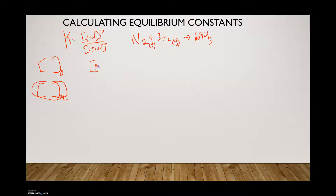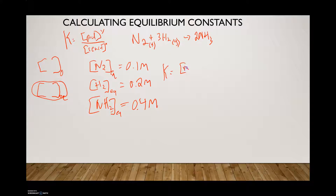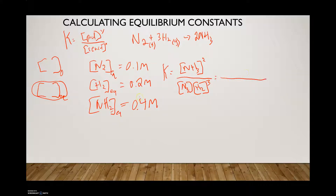In this example, let's say we have the equilibrium concentrations: nitrogen is 0.1 M, hydrogen is 0.2 M, and ammonia is 0.4 M. To calculate the constant, we first write the equilibrium expression — products over reactants — and then plug in those concentrations.